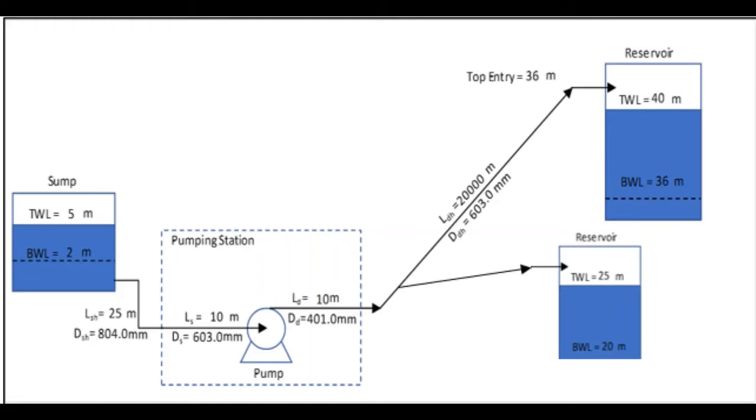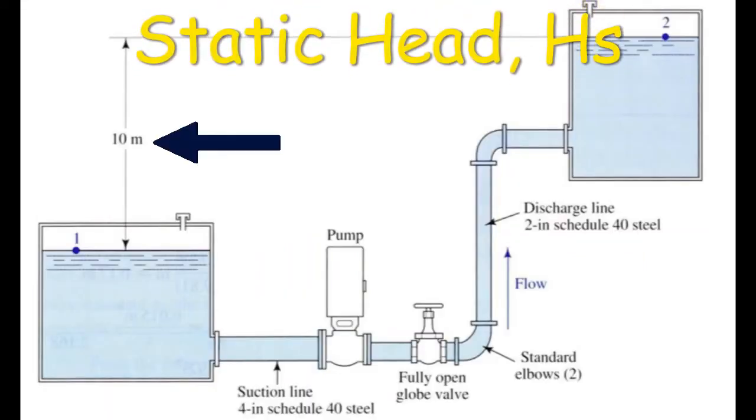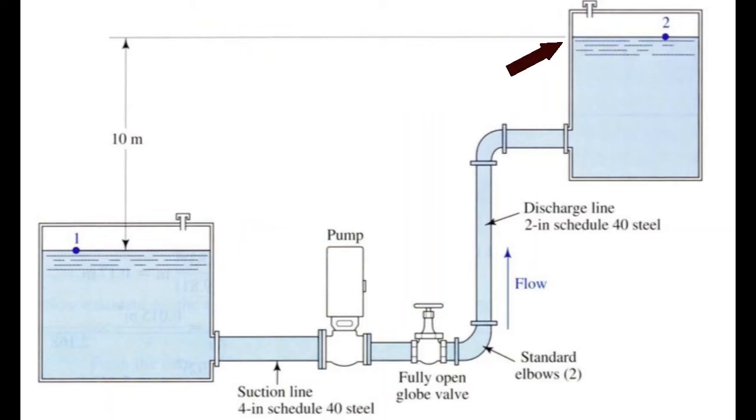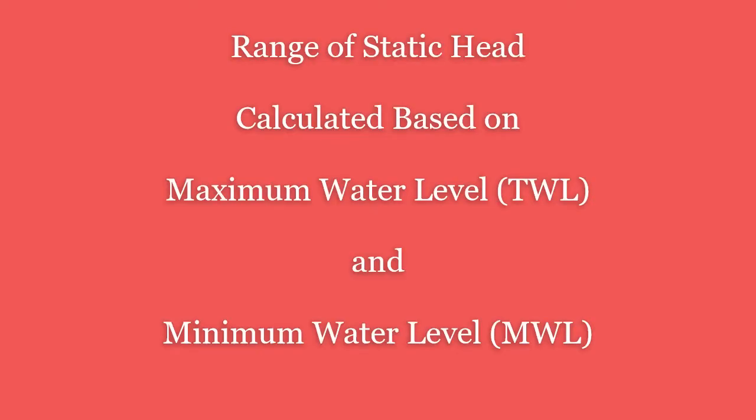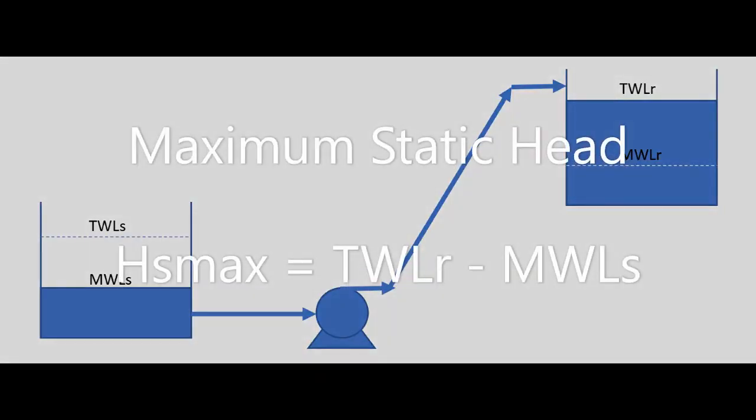Next, let us determine the static head, HS. The static head will be determined from the suction tank water level and the receiving end water tank level. HS equals receiving tank water level minus suction tank water level. In order to examine the range of head required, the static head shall be calculated based on the maximum and minimum water levels at both tanks. The maximum water level at the receiving water tank minus the minimum water level at suction tank will give you the minimum static head.